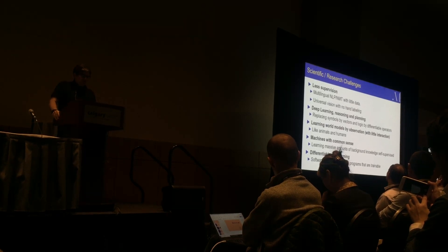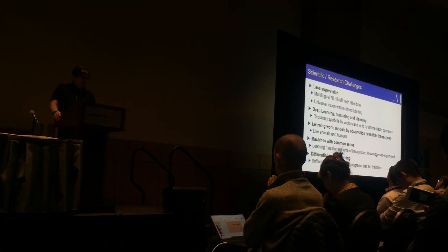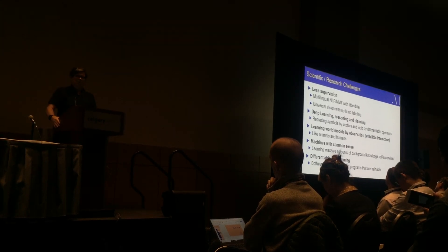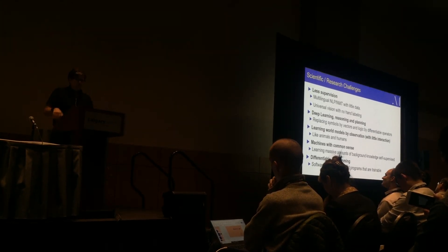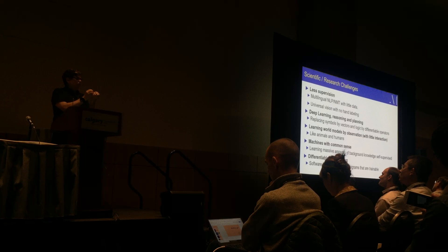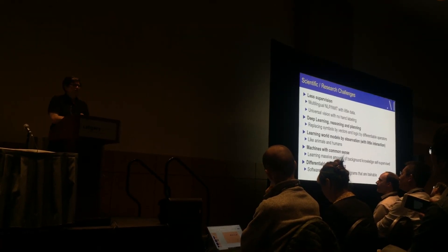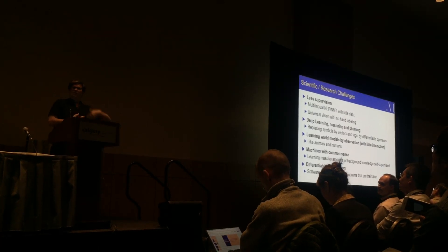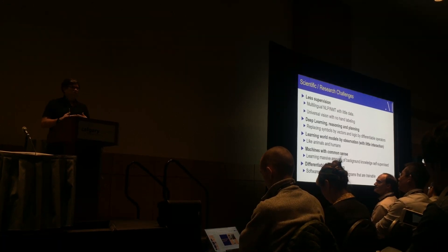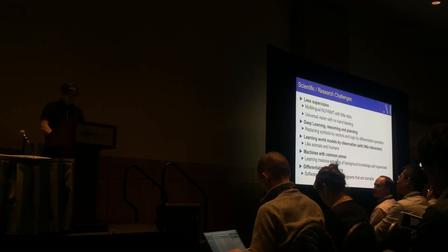The scientific challenges include: less supervision, machines that can plan, and machines that learn world models to build common sense. The last item is what we call differentiable programming — a new way of writing programs where some modules are parameterized and differentiable. You don't entirely specify the program; you let data finalize the details. This is probably going to change a lot of how we program machines in the future.